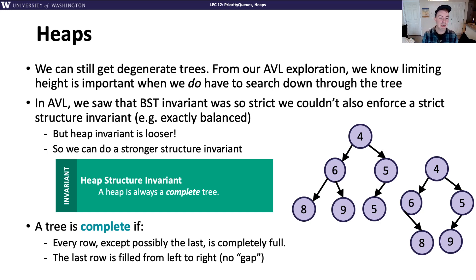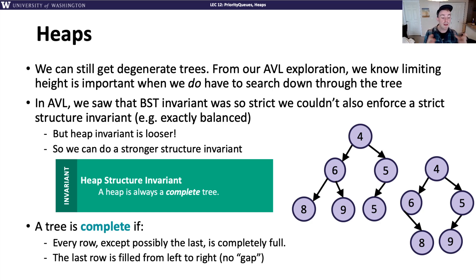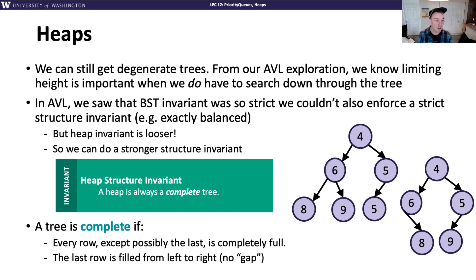Here are examples of trees that do or don't meet the heap structure invariant. The tree on the left is complete: each row is full — one node, two nodes — and that last layer has empty spots only at the rightmost positions. The tree on the right meets the heap ordering invariant (4 at top, 6 and 5 above 8 and 9), but it's not complete because there are missing nodes in the last row that aren't all at the end.